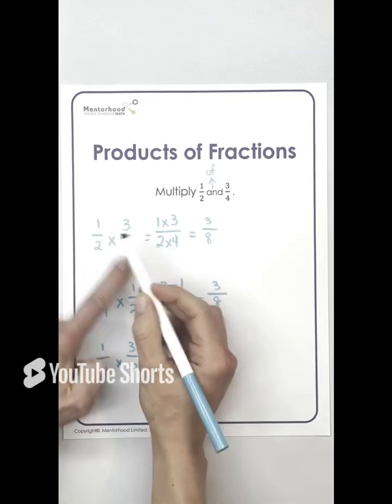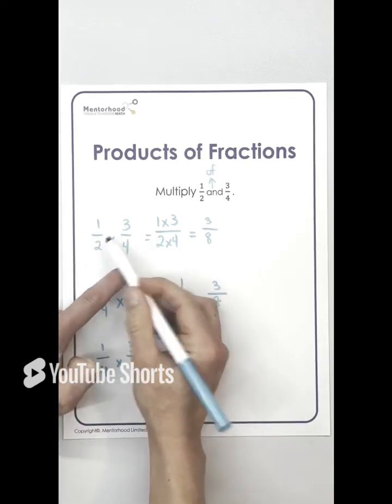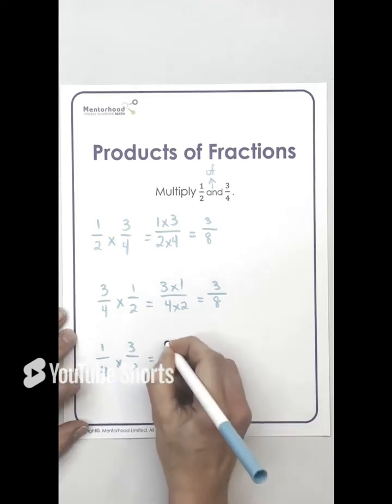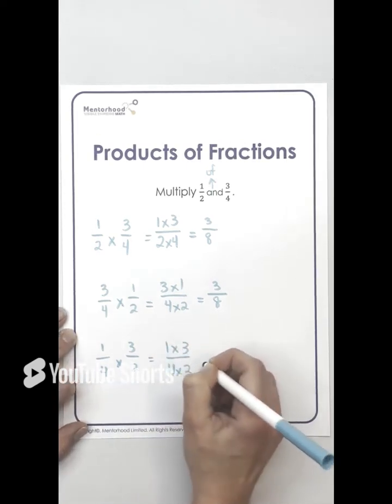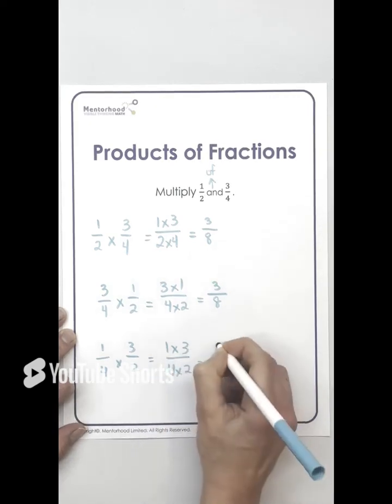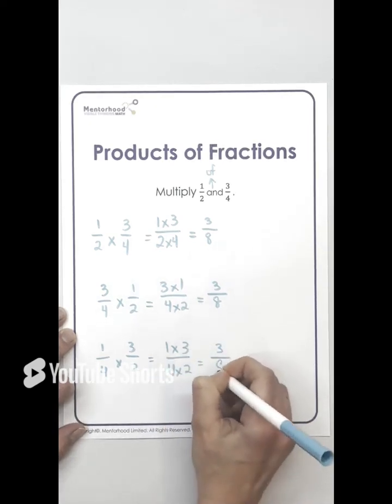this is one over two, I switched the bottom. So it's now one over four and then three over four became three over two. So let's write that out. One times three over four times two equals. One times three is three. Four times two is eight.